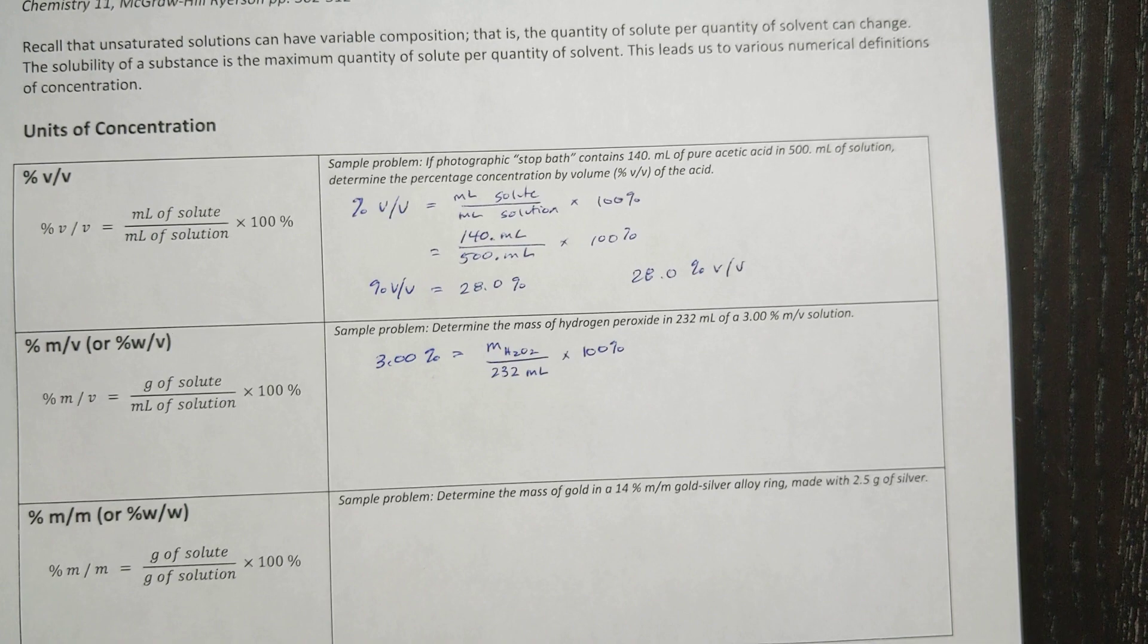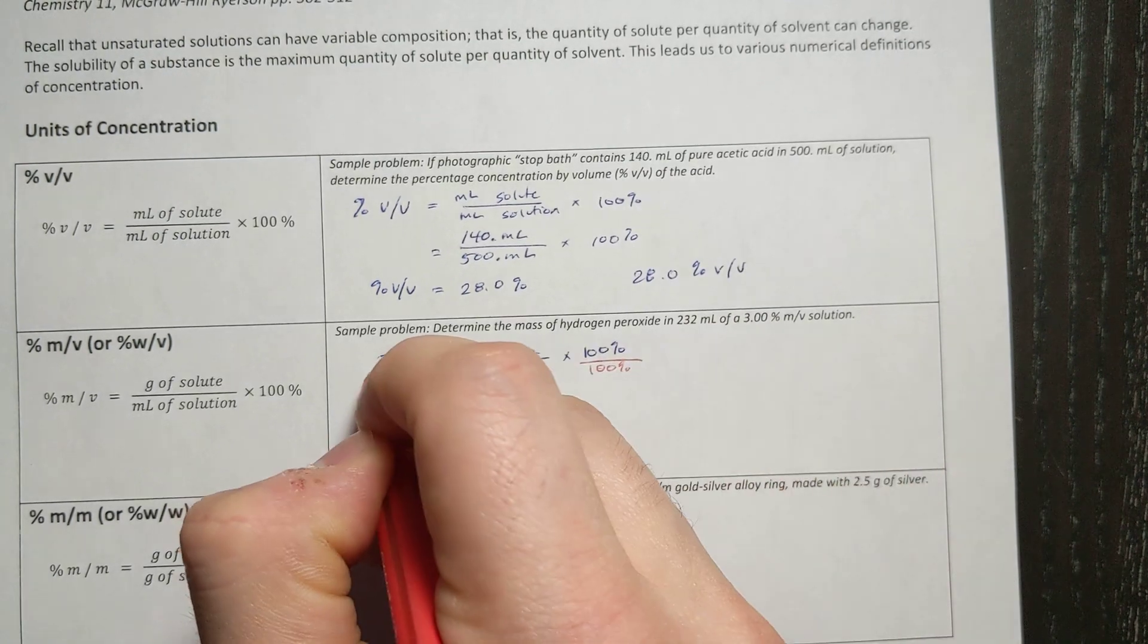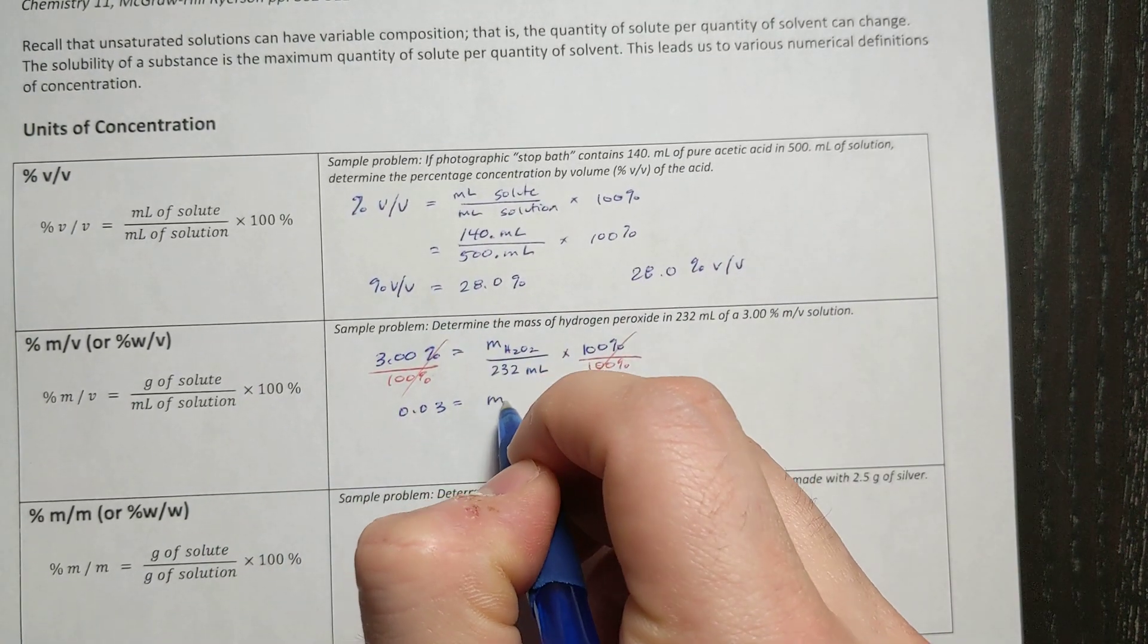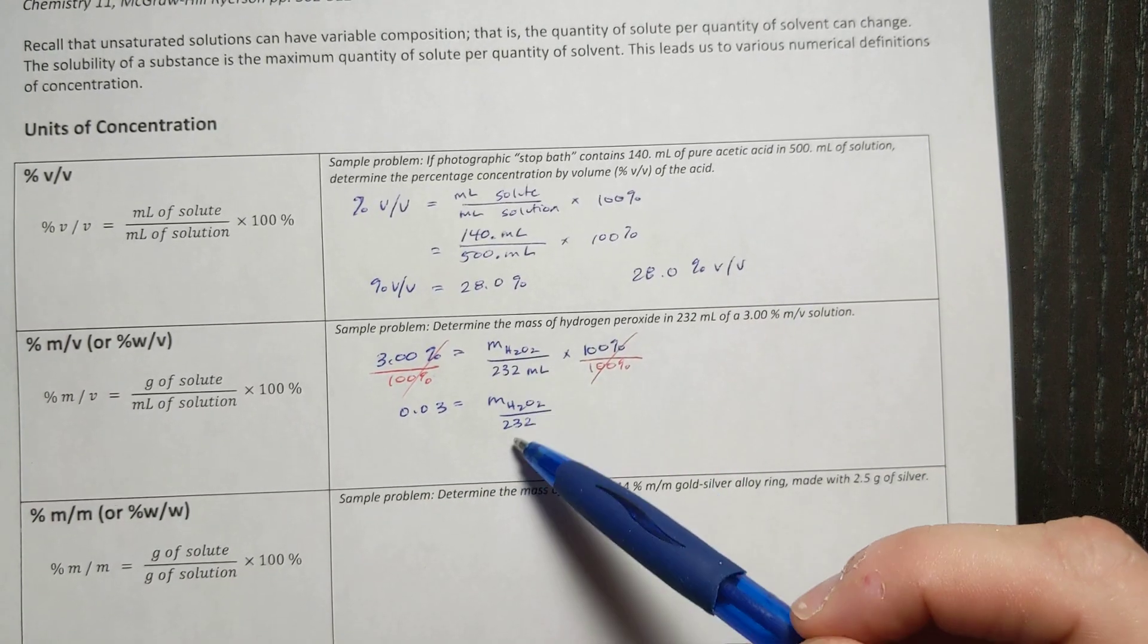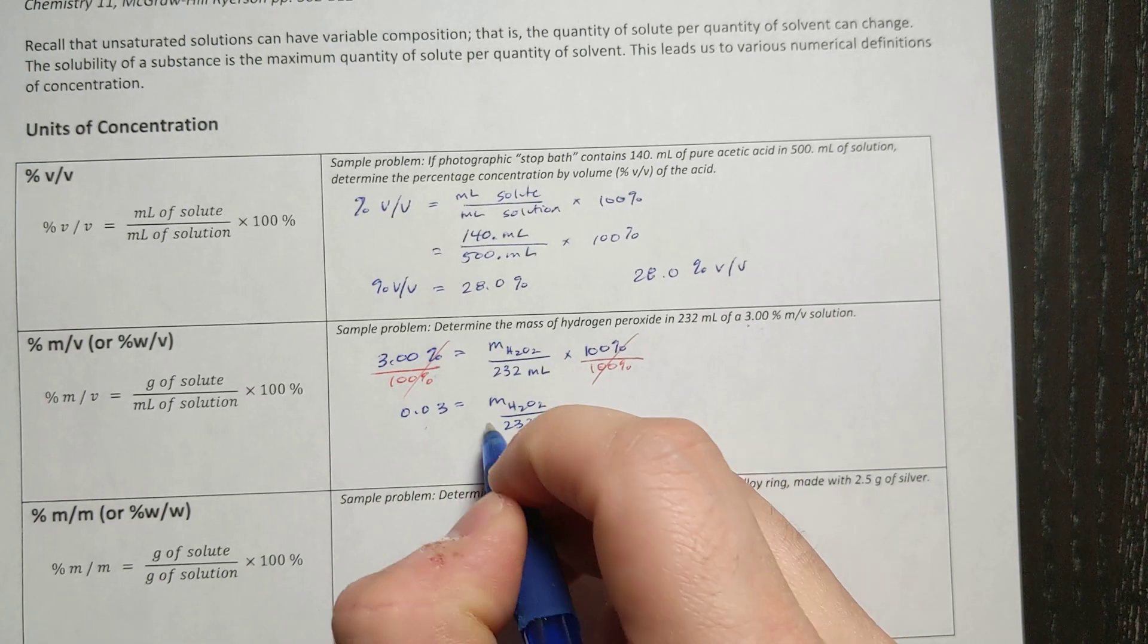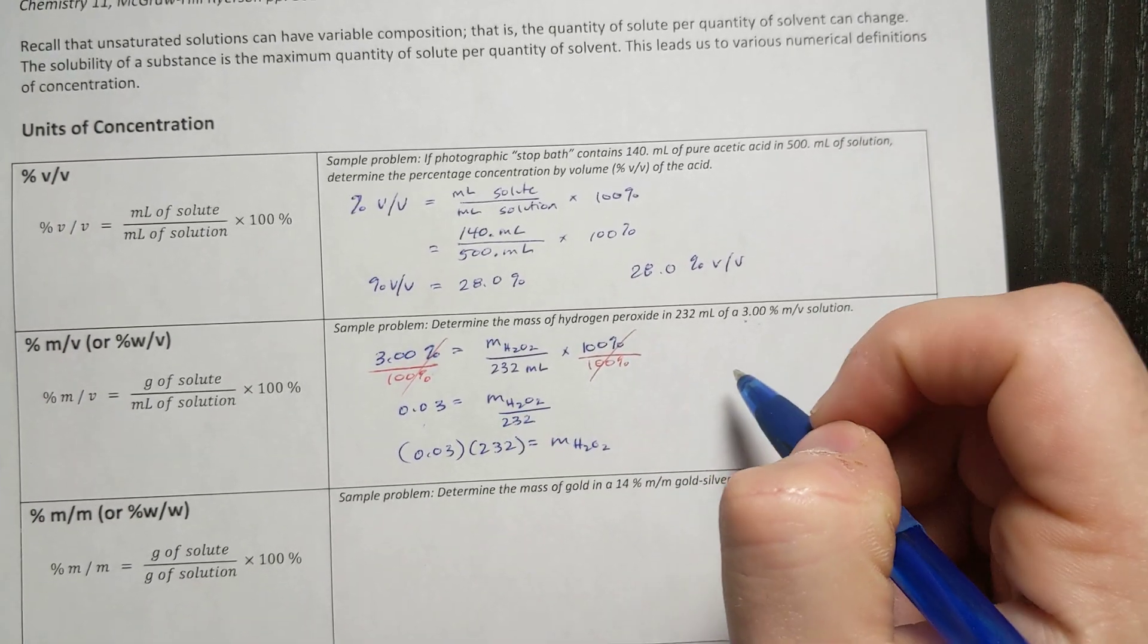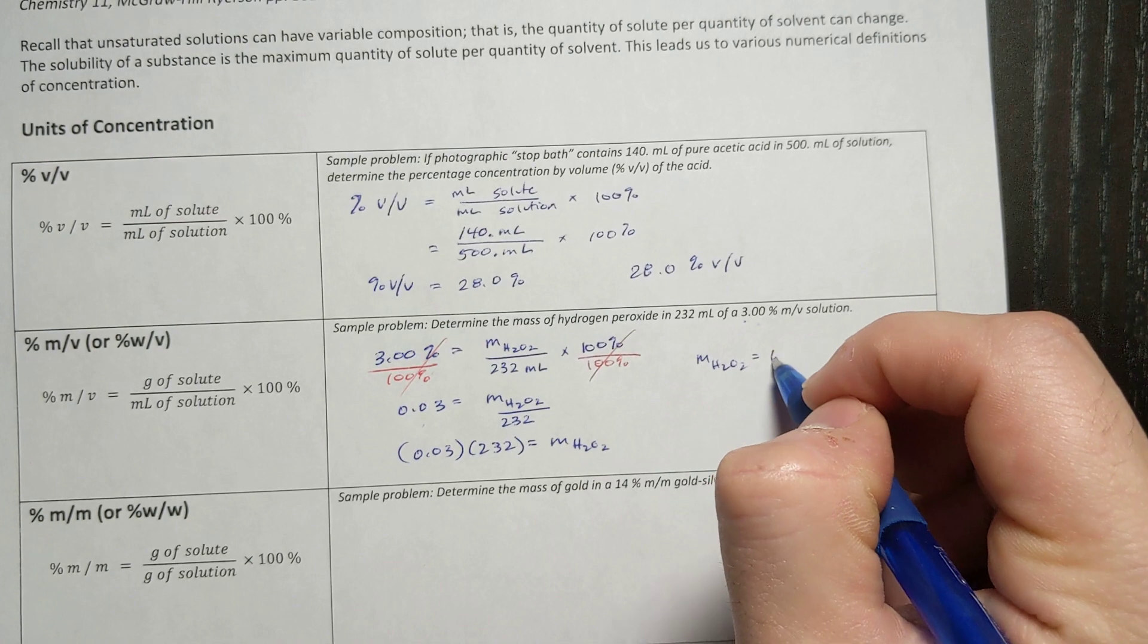So then I need to divide both sides by 100%. So divide by 100%, divide by 100%. This will cancel, this will cancel. And I get 0.03 is equal to the mass of H2O2 over 232. And note that you can actually go straight to this step if you wanted to just quickly convert that into a decimal, as it is here. And then we'll find the mass of H2O2. So 0.03 times 232 is equal to the mass of H2O2. And that equals to mass of H2O2 is equal to 6.96 grams.